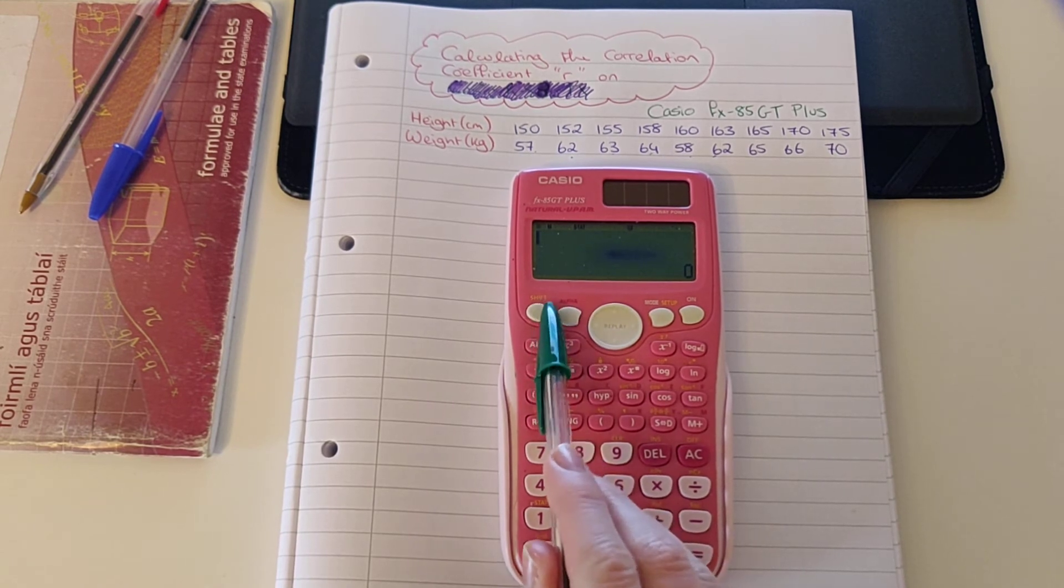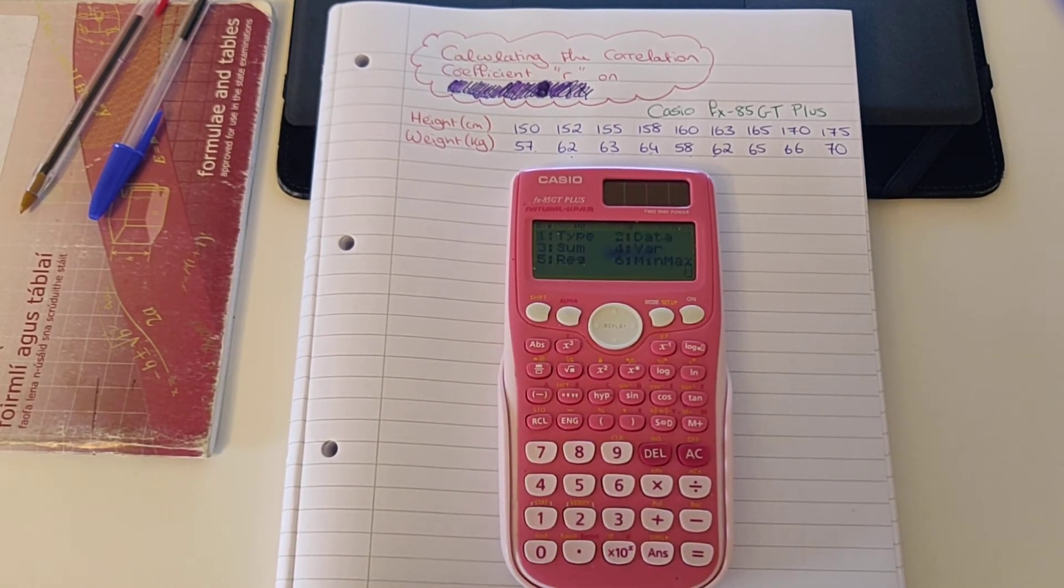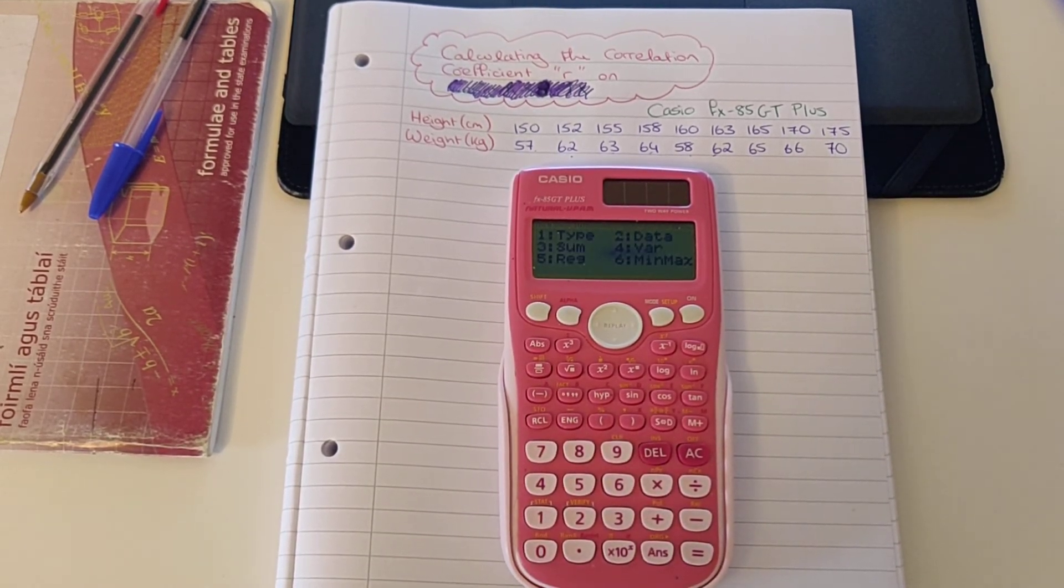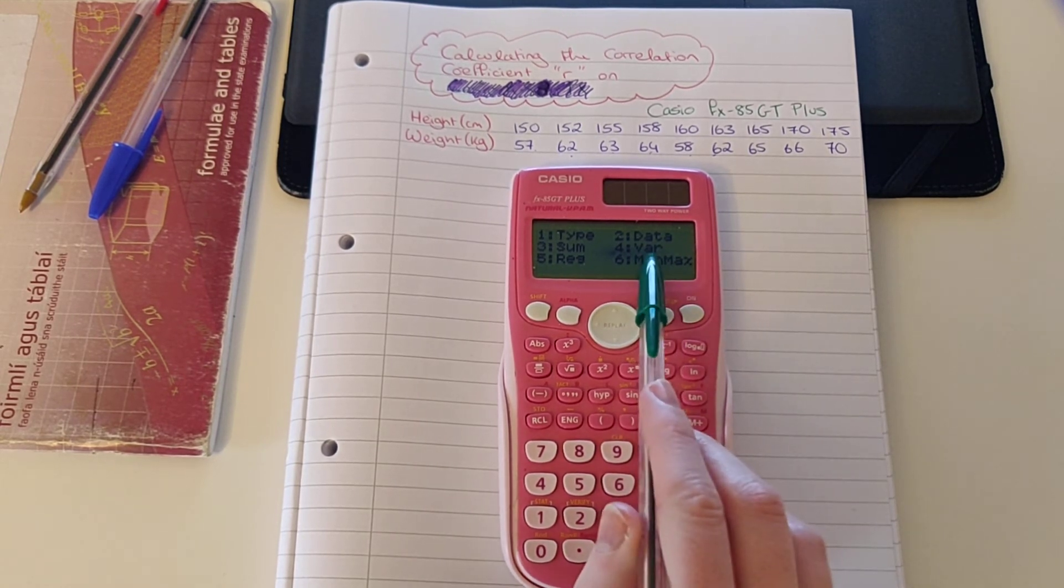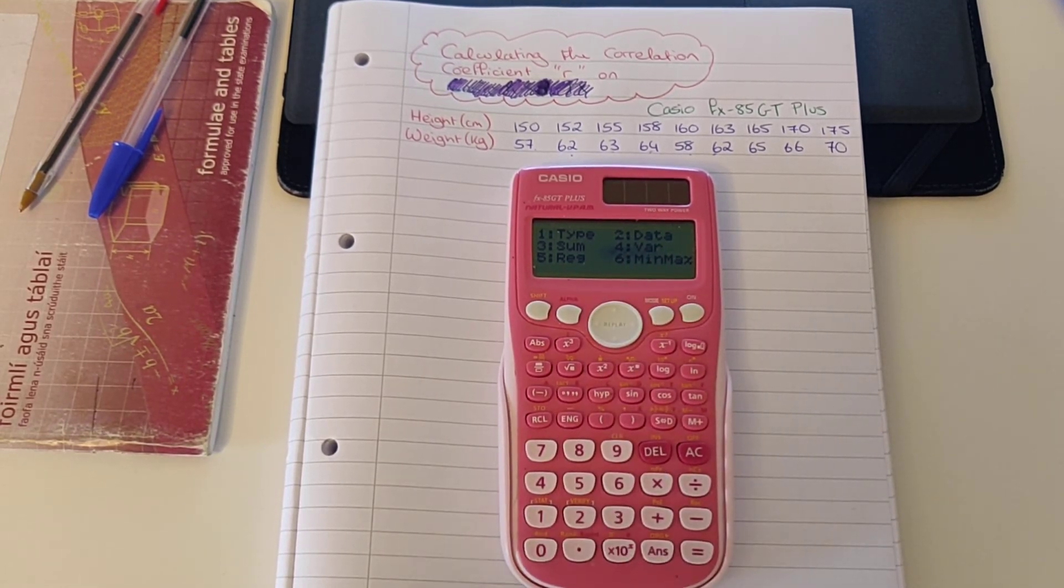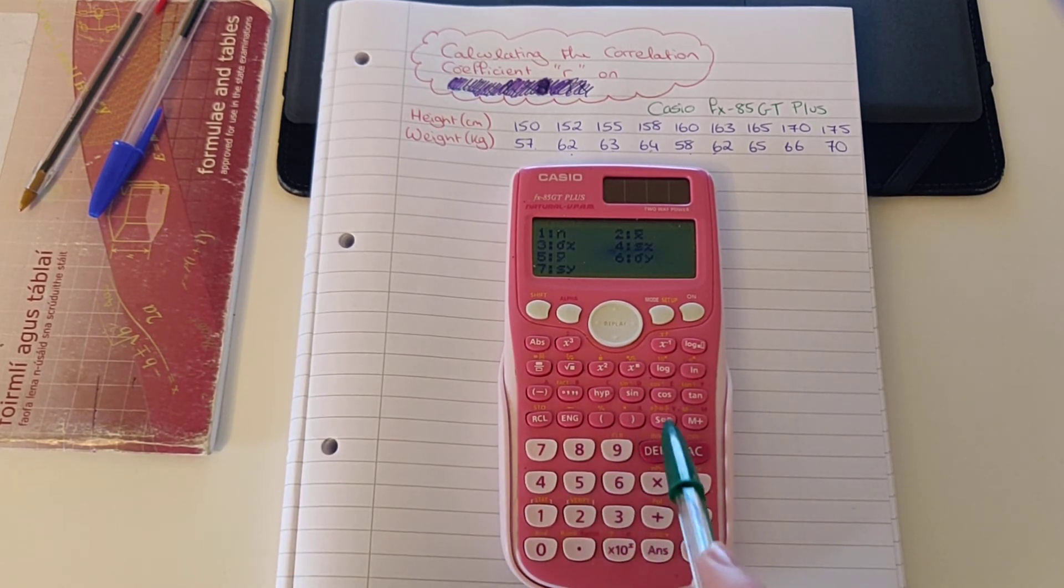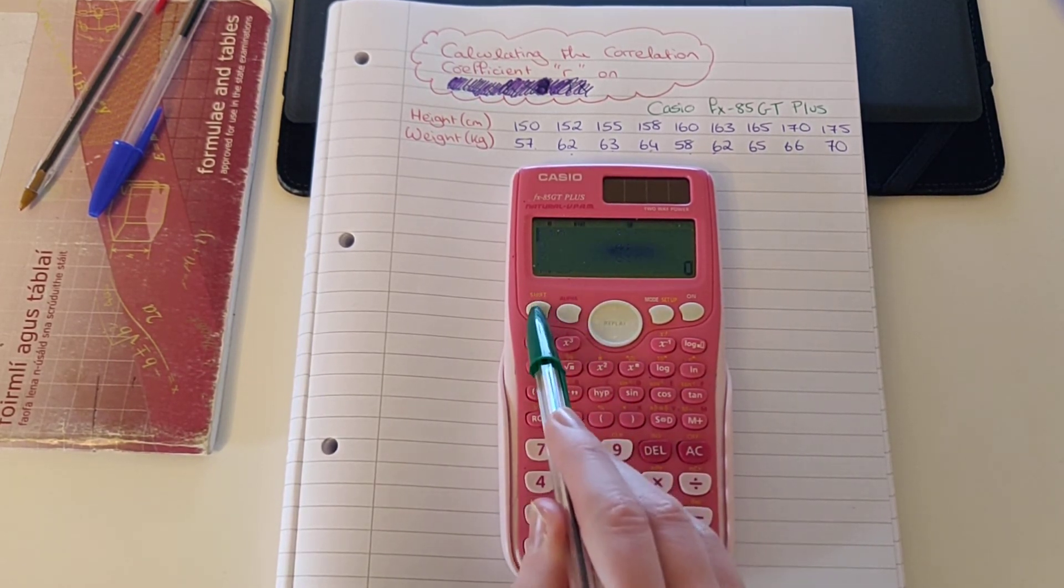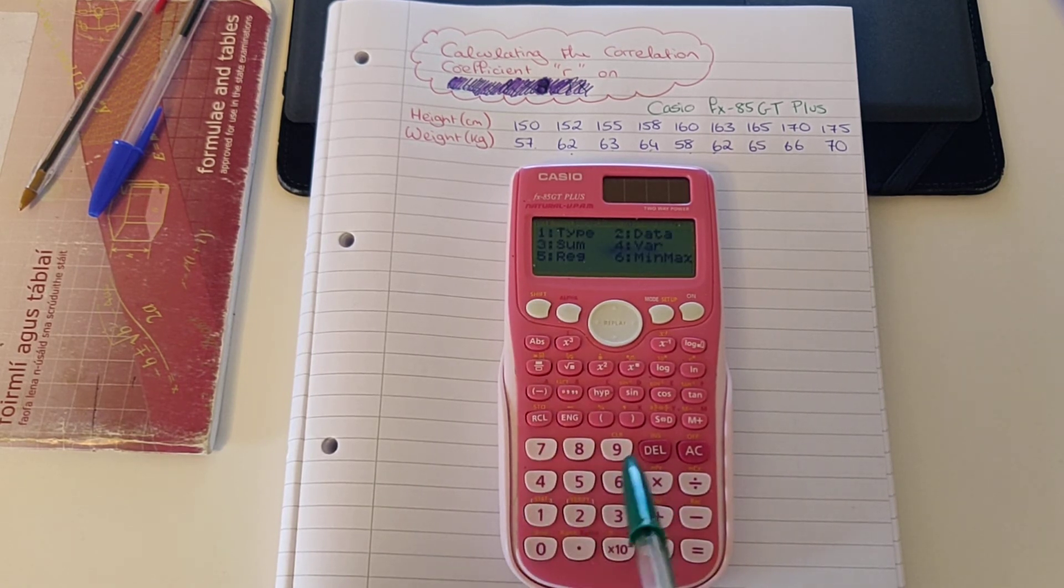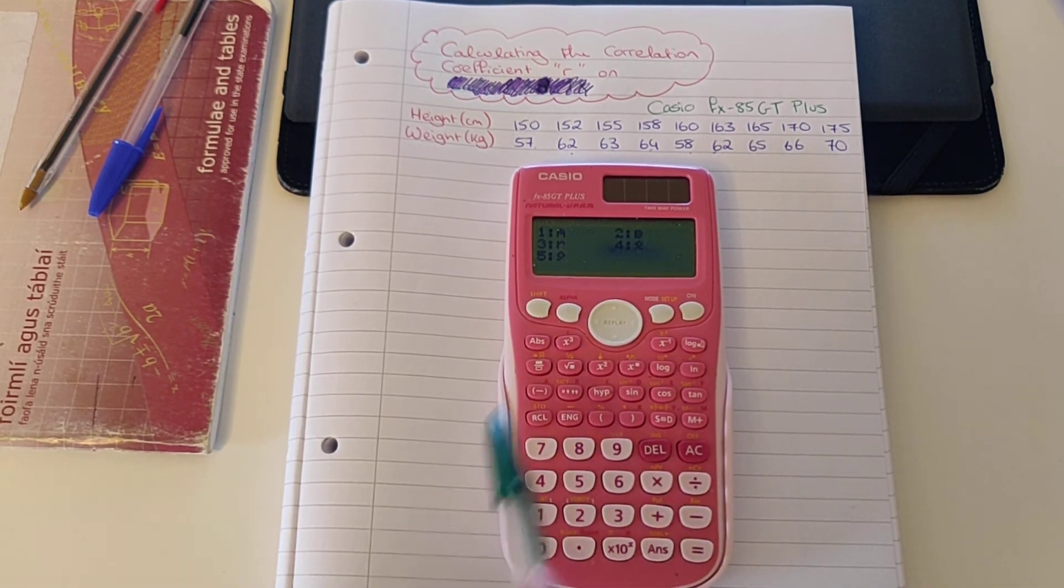Then we're going to press shift and 1 to get our statistics options here. We're going to press 5 for regression calculation. I pressed 4, apologies. So I'm going to go again, press Shift and 1, press 5 for regression calculation.